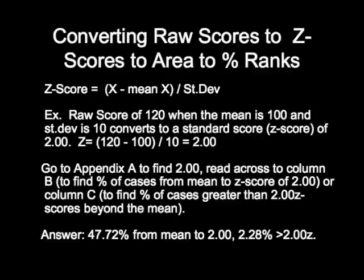If you wanted to find out what percent of the cases were greater than two Z-scores or standard scores from the mean, you'd read over to column C, and you'd see that value is 2.28. That's how you read a normal curve table.